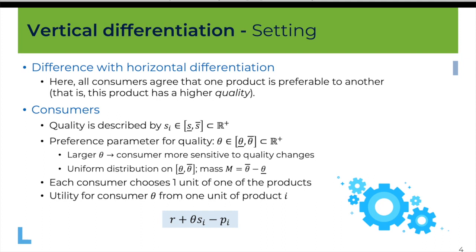This model is about quality. We will represent quality by a letter S_i, where i is the product, S_i being the quality of the product. This quality can be taken within some interval with a lower bound S-lower-bar and an upper bound S-upper-bar, and this is a number that can be taken on the real line.